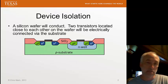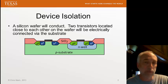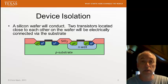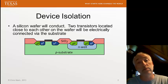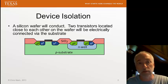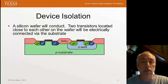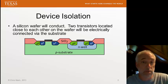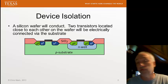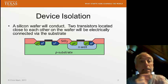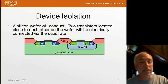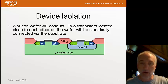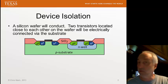Why do we need device isolation? We are building transistors in a silicon substrate, and we'll put two transistors next to each other. What's in between those two transistors? A silicon wafer — in this case, a P-doped silicon substrate. A silicon wafer conducts and has electrical properties. If we have two transistors very close to each other, they might interact with each other in ways that we did not intend. So we need to somehow isolate one transistor from the other so that they can both behave independently when we apply signals and voltages.